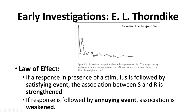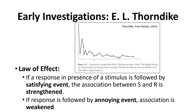Looking at these results, Thorndike determined they weren't using insight. If they were, we'd expect them to go from being unable to solve the problem for a long time to suddenly solving it consistently. Instead, we see a gradual decrease — baby steps in their learning, getting a little better each time. Their new knowledge was gained through a process that lines up with stimulus-response associations. They made an associative link between a stimulus and a response, determining whether they did that response more or less frequently.